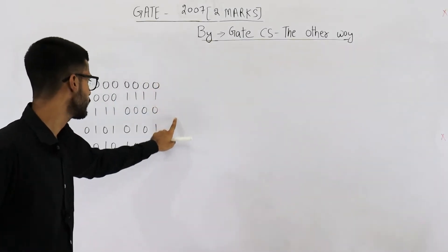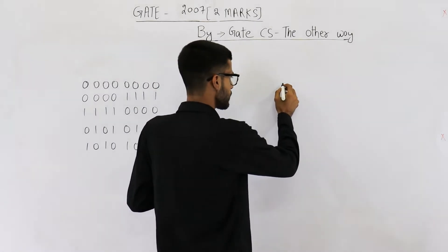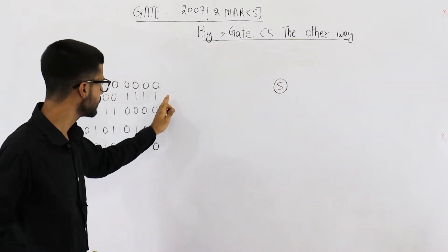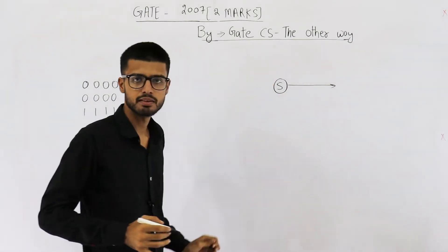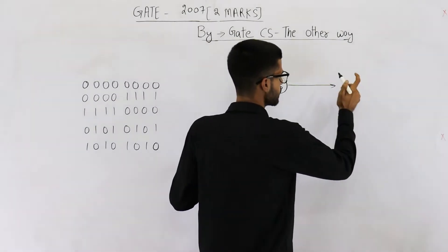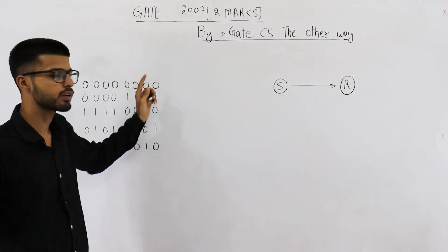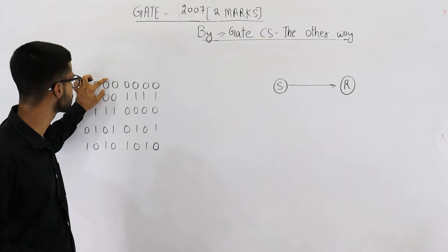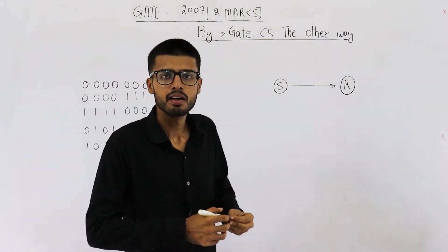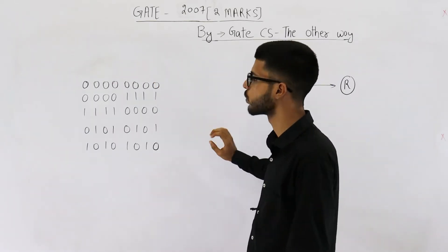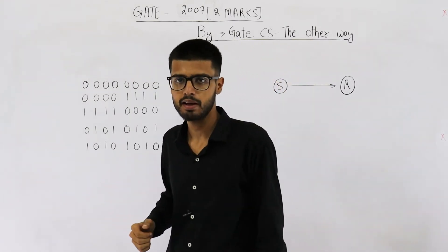If you are allowing only these five code words, this means the sender can send only these five kinds of messages. Suppose the sender sent one of these messages and there was some error. The receiver received something which is not any one of these five. The receiver will see that whatever message was received is not a valid code word — that means there is some error. We need to find out how many maximum errors can be corrected.